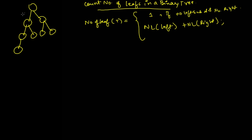For a given binary tree, to identify whether a node is a leaf node, we check whether it has a left child or a right child. If a node has any child — left or right — then it is not a leaf node. If a node has no left child and no right child, we count it as 1. Otherwise, we count the leaf nodes in the left part plus the right part.